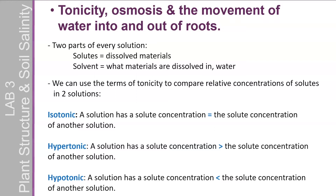We can use the terms of tonicity to compare relative concentrations of solutions. If the solution the plant is in is similar to the solution of the plant, you've got an isotonic solution. If there are more solutes in the solution that the plant is sitting in than what is in the plant, it's a hypertonic solution. If there are less solutes on the outside of the plant than on the inside, it's a hypotonic solution — and that's the one you really want for your plants, because it allows water to move into the cells. Water moves to the higher concentration of solutes.